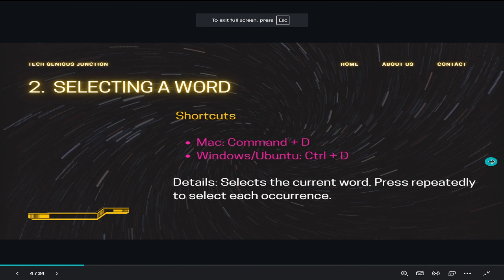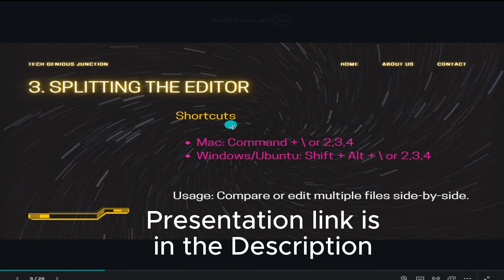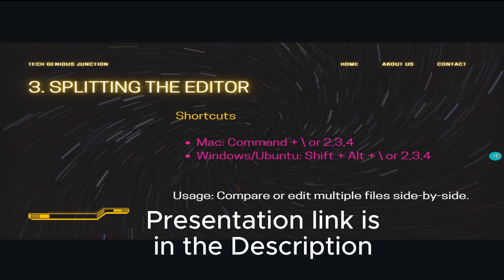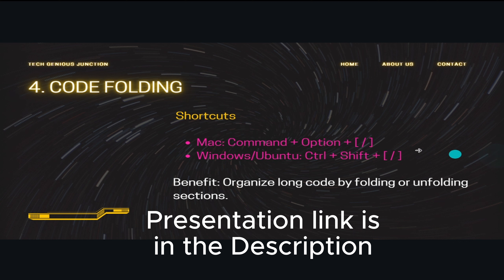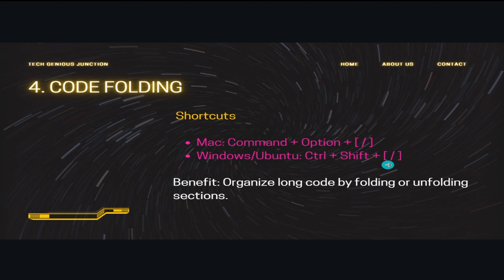The next shortcut is splitting the editor — you can see the command demonstrated. After that is code folding, using Control+Shift+[ to fold code blocks.